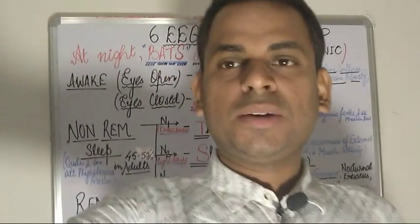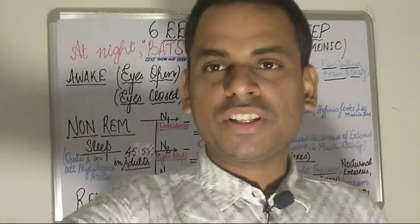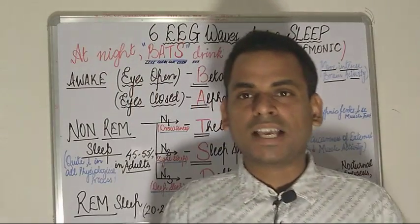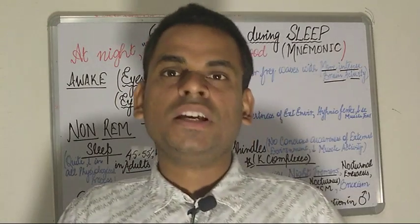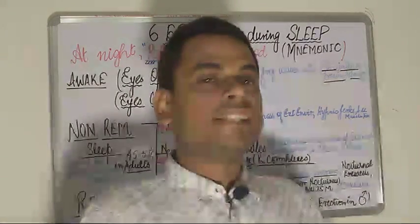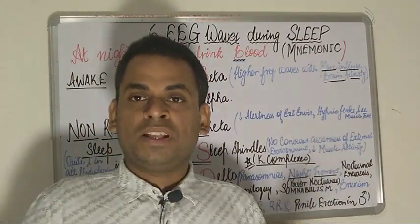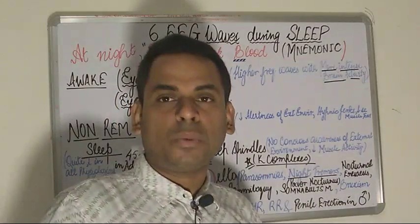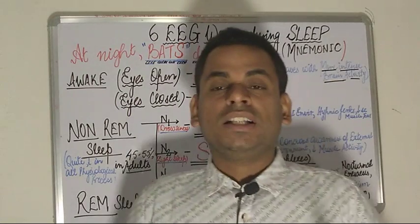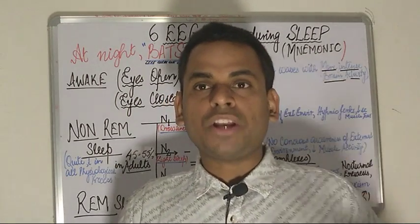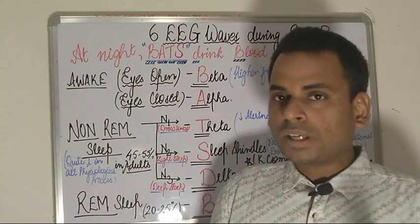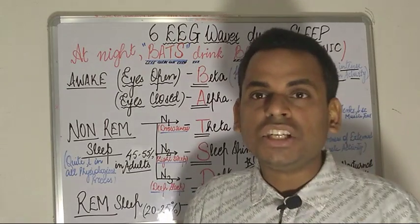Hello students, welcome to the next session of the physiology series. Today, in succession to the previous video about the EEG waves, the topic of discussion will be the sleep cycle and the six EEG waves during sleep. I will be focusing particularly on mnemonics to help easily remember the different types of EEG waves produced sequentially during sleep.